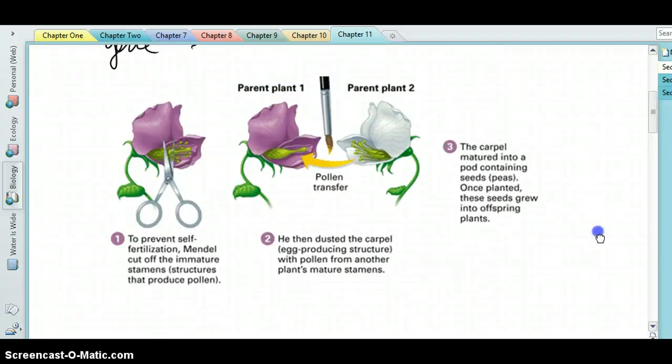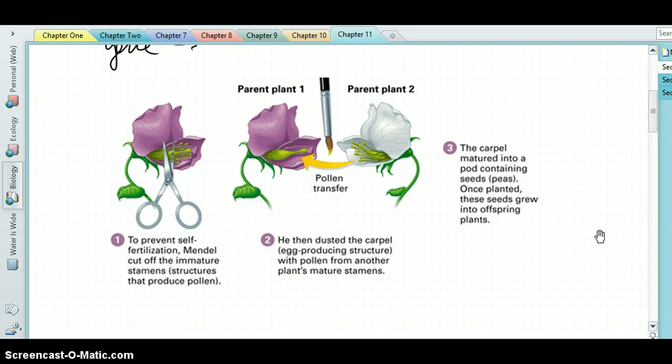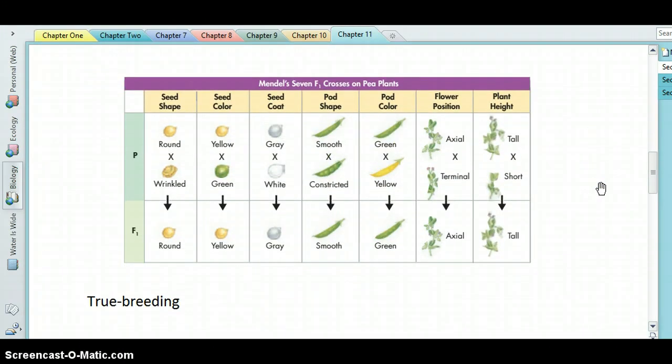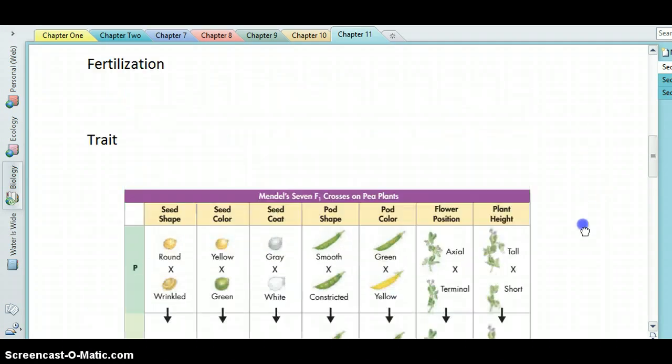And so they're tall or they're short, or they have green seeds or yellow seeds as we see in the table down here, or round seeds or wrinkled seeds, et cetera. Nice, discrete, single gene traits.